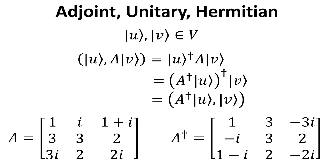We conclude the definition of the adjoint operator with an explicit example. The adjoint of matrix A is simply the transpose conjugate of matrix A. Recall that the transpose action swaps the element IJ with element JI, while the conjugate action swaps the sign of the imaginary part of the elements. The transpose operation leaves the position of the diagonal elements unchanged, and we only need to complex conjugate the diagonal elements. The upper and lower off-diagonal elements swap due to the transpose operation, followed by complex conjugation.